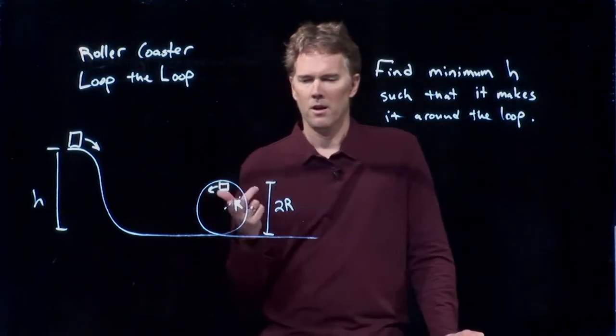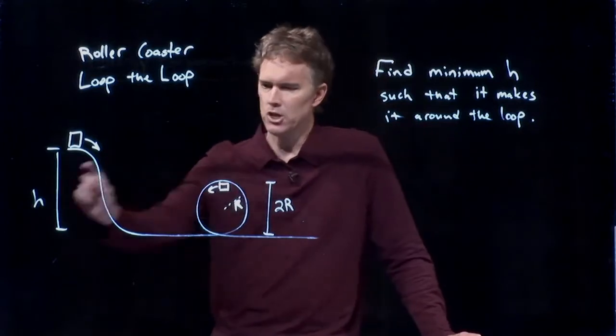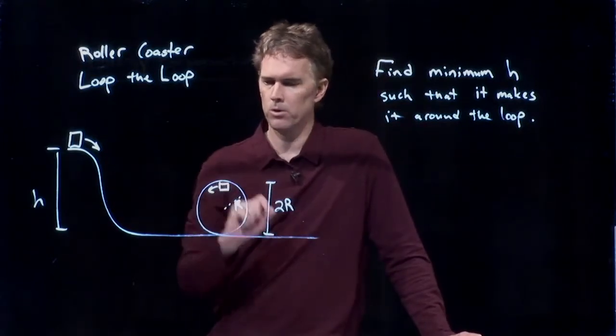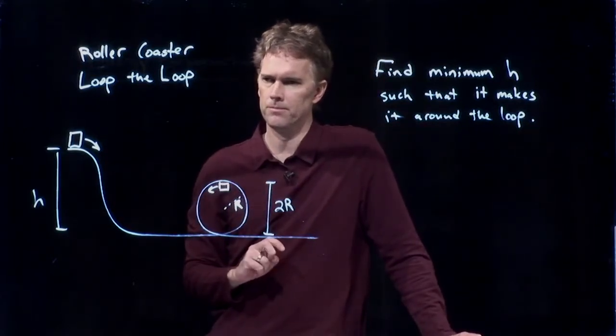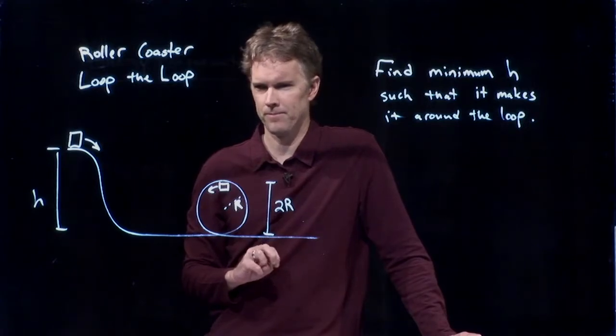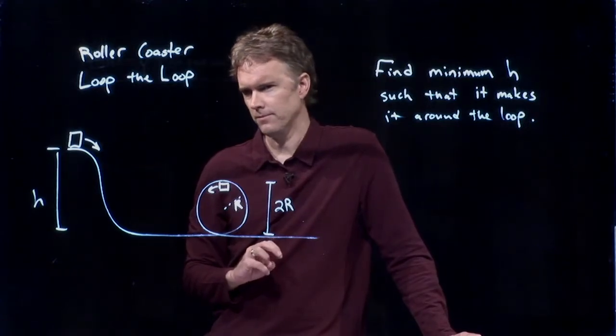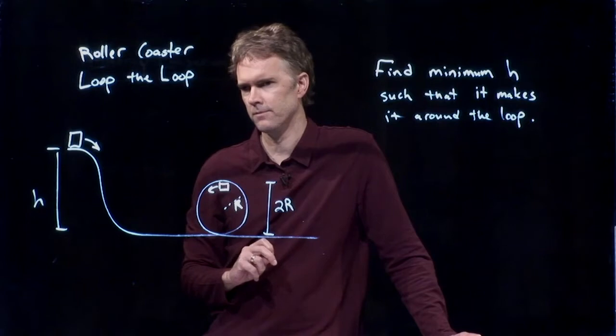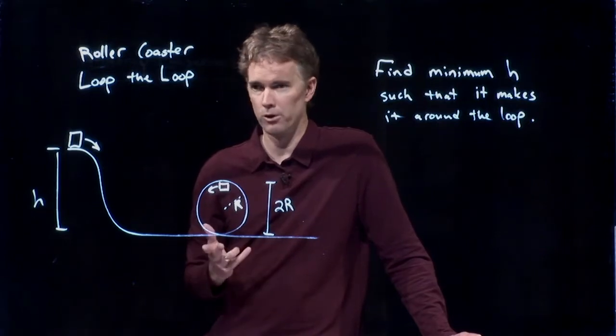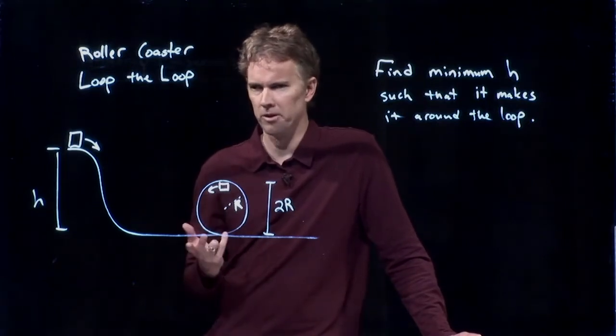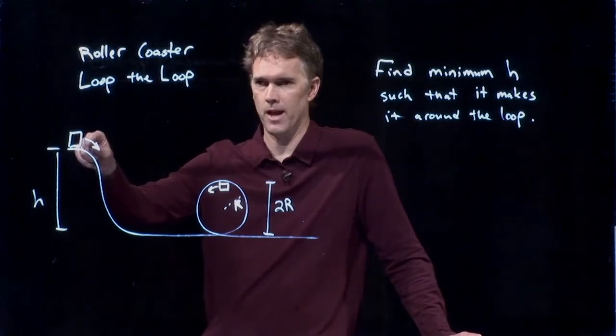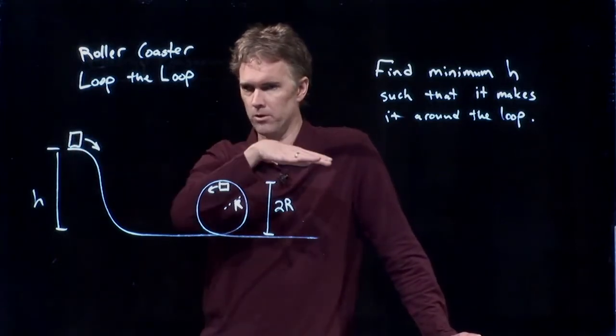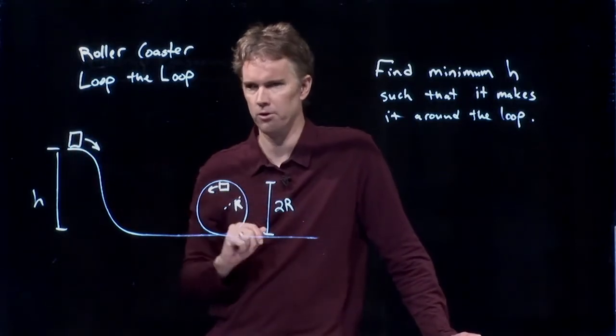Nick, what do you think? If I set h equal to 2r, is my roller coaster going to make it around the loop? No, I don't think so. Why not? I don't know, it's just a guess. Okay, you've been on roller coasters before, and you know from experience that when you get to the top of the hill and you look out across the rest of the roller coaster, there's nothing as high as that initial hill, right? Right. Even any loop after that.